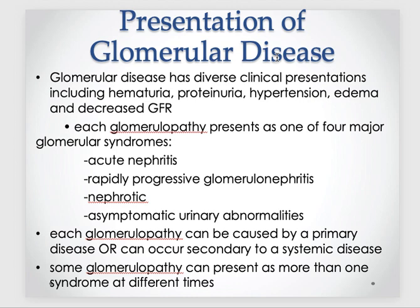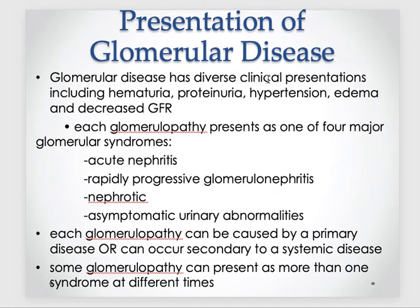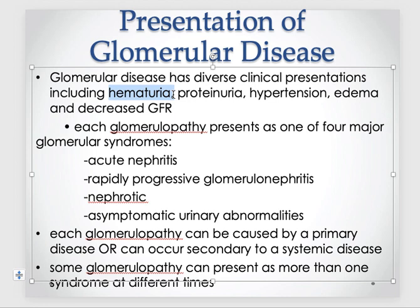Glomerular diseases have diverse clinical presentations. As shown in the diagram, a damaged glomerulus allows blood and proteins to leak out, presenting as hematuria and proteinuria. We previously discussed hematuria — true versus pseudo — and proteinuria in detail, including the nephrotic range and albuminuria. Additional presentations include hypertension, edema when patients lose a lot of protein, and decreased GFR when many glomeruli are affected and filtration is reduced.